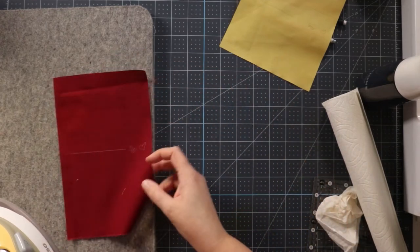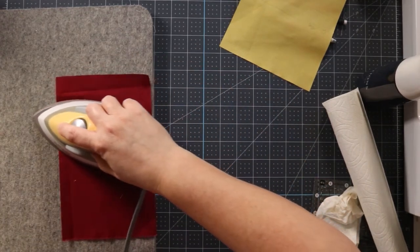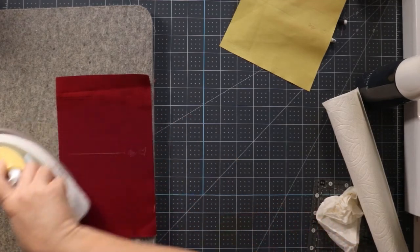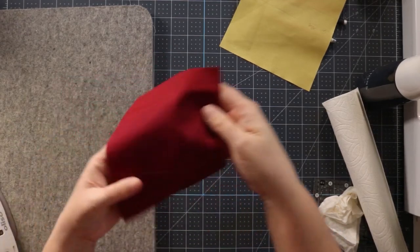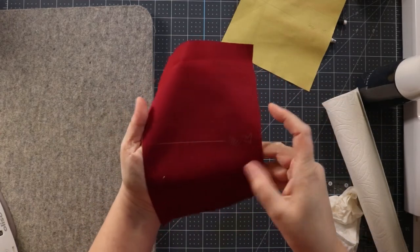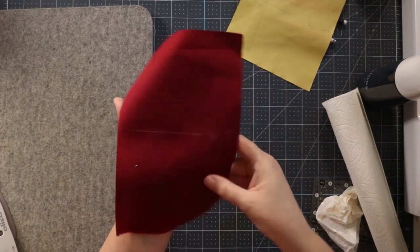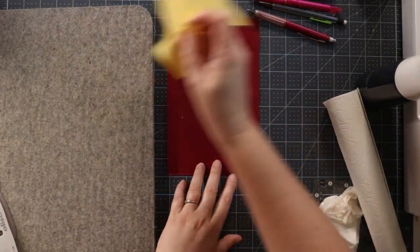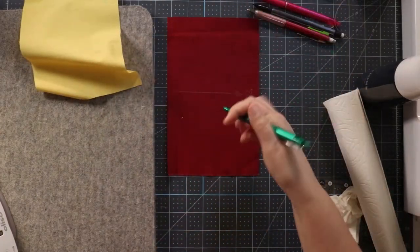When I do it on a dark fabric like this one, you can see a little bit better that those lines actually became white. So the friction pens don't really disappear. They become white. And we'll go ahead and grab one of them